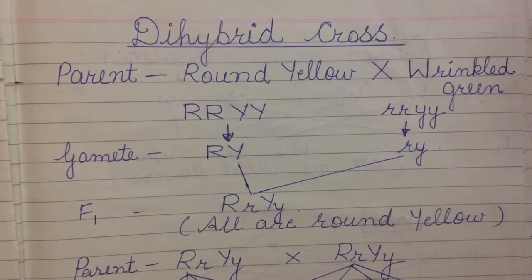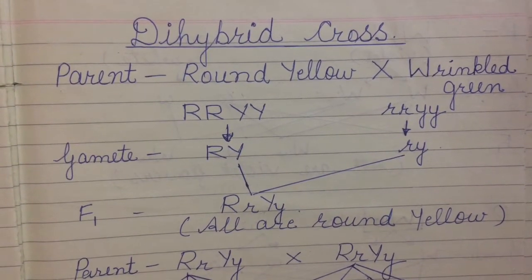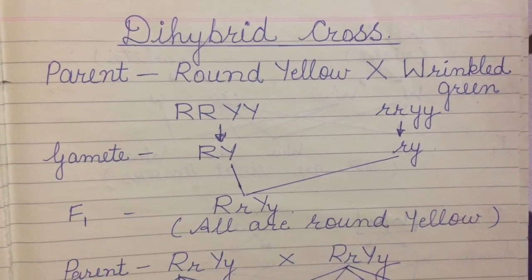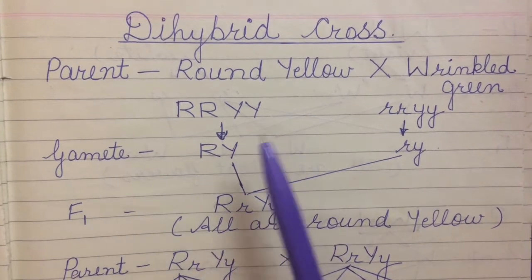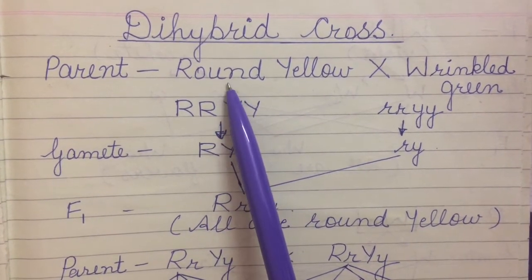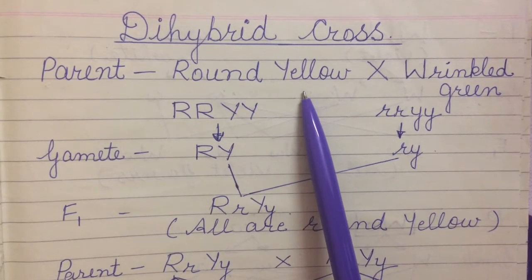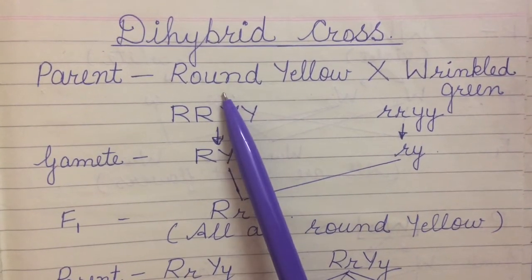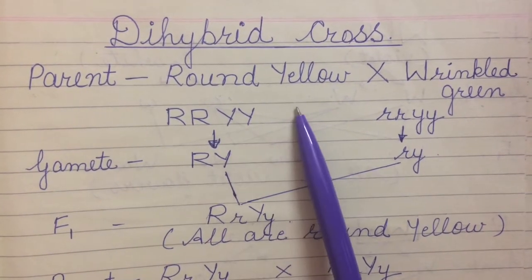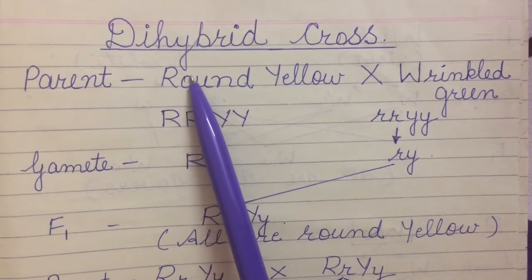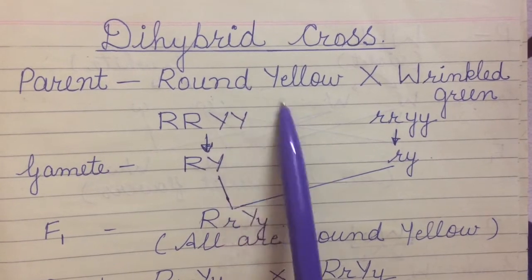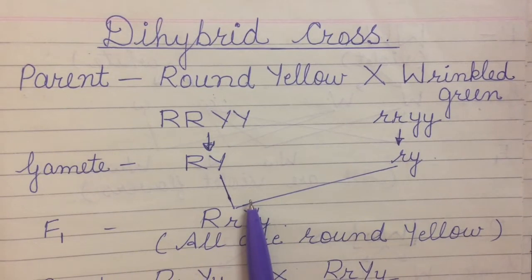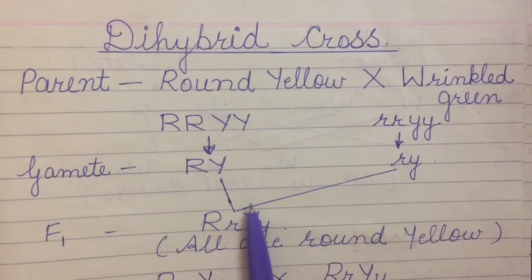Good morning students. Our today's topic is dihybrid cross. In dihybrid cross, we consider two characters at a time — that is roundness for the shape and yellow for the color. So in this cross we are considering shape as well as the color of the seeds. This is known as dihybrid cross. In dihybrid cross, hum do characters ko ek time study karte hain — yahan pe hum roundness (shape) aur color consider karte hain.